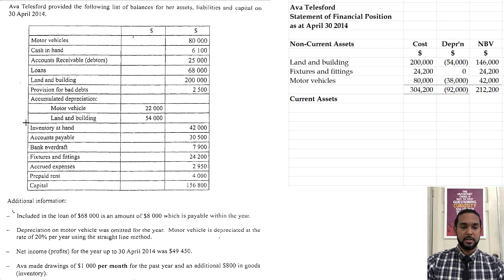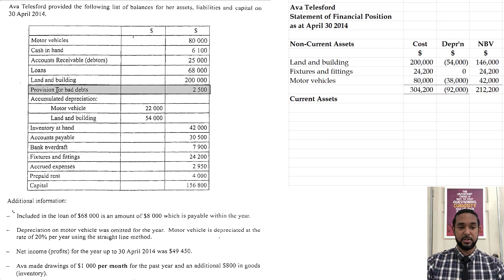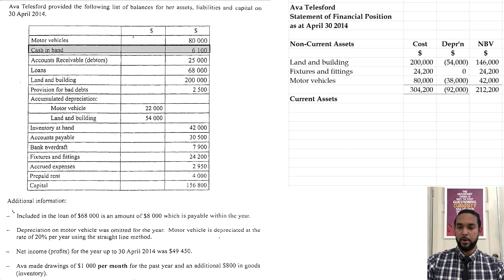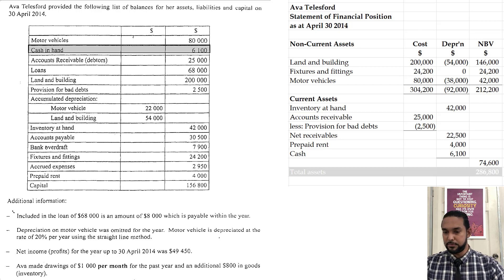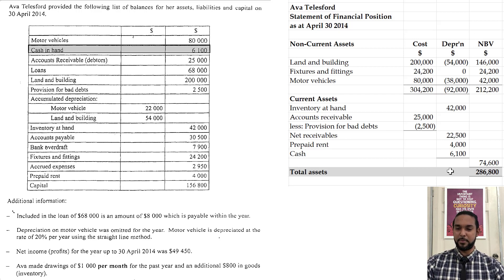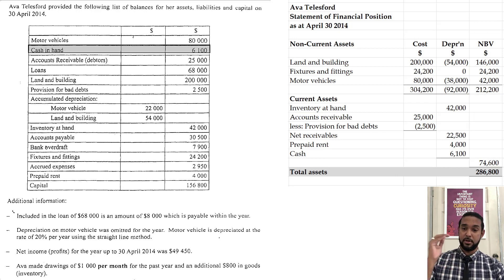Next, current assets. We have inventory or stock, then accounts receivable or debtors — and don't forget you have a provision for bad debts, also called allowance for doubtful debts — so we subtract that figure of $2,500 from the $25,000. We also have prepaid rent as a current asset and cash in hand of $6,100, giving us a subtotal of $74,600 for current assets. Adding non-current and current assets together gives us total assets of $286,800.